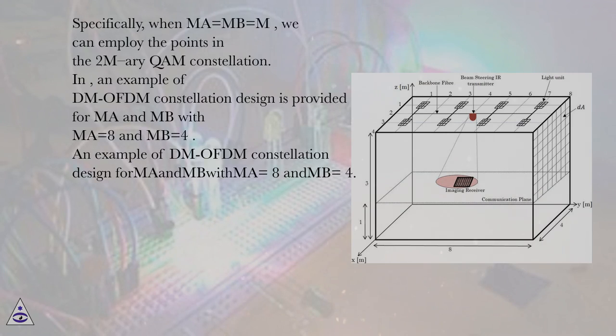Specifically, when MA equals MB equals M, we can employ the points in the 2M-ary QAM constellation. An example of DM-OFDM constellation design is provided for MA and MB with MA equals 8 and MB equals 4.